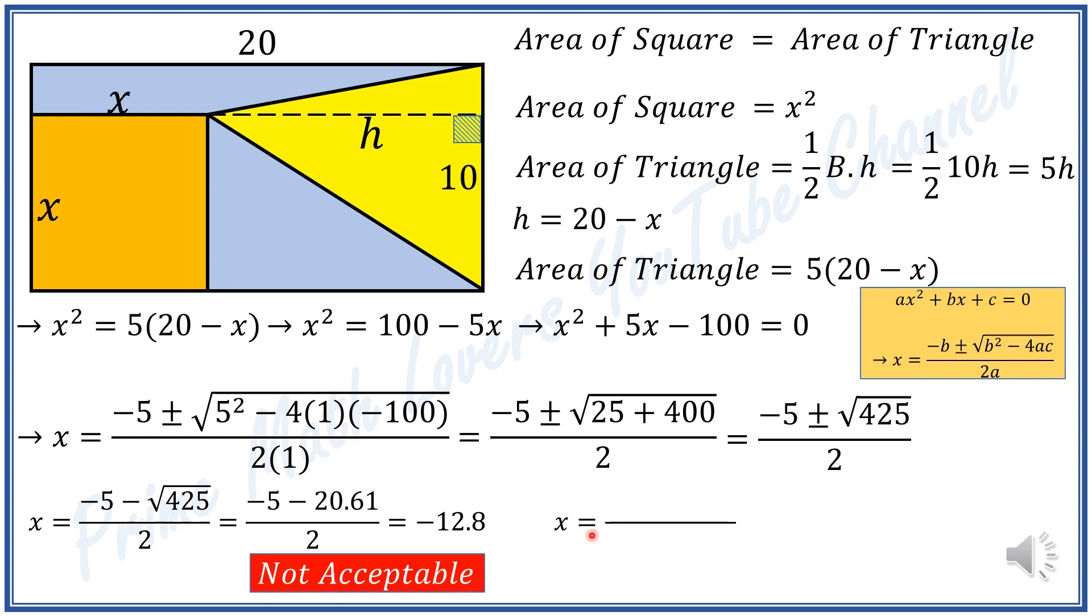We go for the other solution, which is x equals negative 5 plus square root of 425 divided by 2, or negative 5 plus 20.61 divided by 2, which equals 7.8. So our valid solution is x equals 7.8.